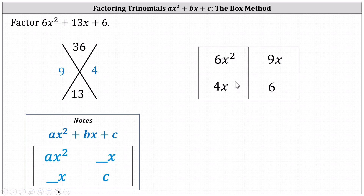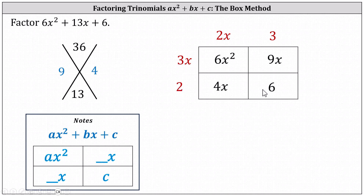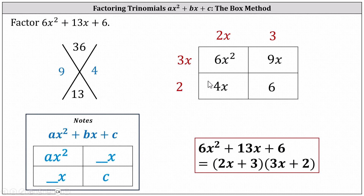And now we look for the greatest common factor in each column and each row. Looking at the first column, we have 6x squared and 4x — the greatest common factor is 2x. In the second column, we have 9x and 6 — the greatest common factor is 3. Moving to the first row, we have 6x squared and 9x — the greatest common factor is 3x. And in row two, we have 4x and 6 — the greatest common factor is 2. We now know the factors are 2x plus 3 and 3x plus 2.